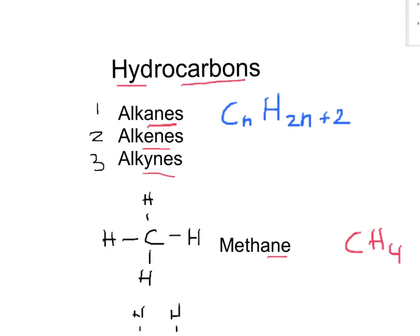For alkenes and alkynes, the general formula will be, for alkenes first, is CnH2n. And for alkynes, the general formula will be CnH2n-2. Let's see how that works and do a few examples.